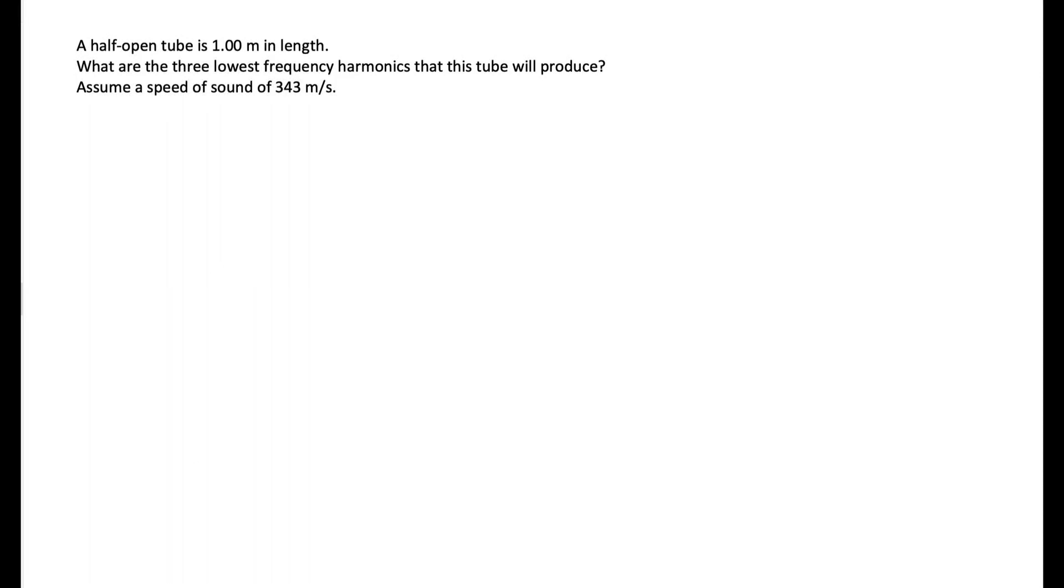A half-open tube is one meter in length. What are the three lowest frequency harmonics that this tube would produce? Assume a speed of sound of 343 meters per second.